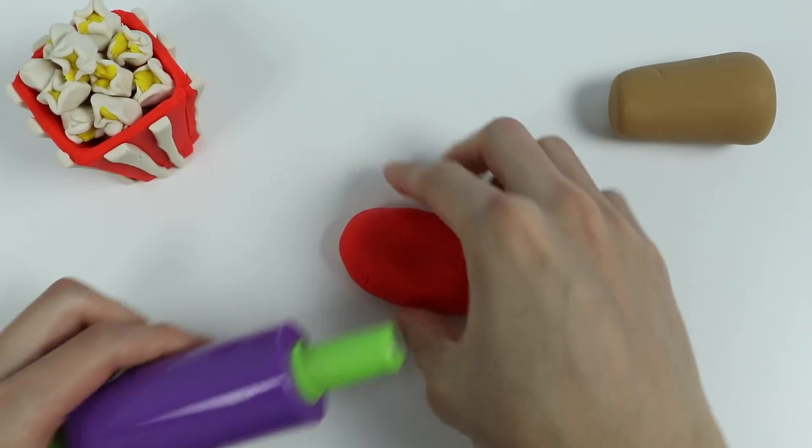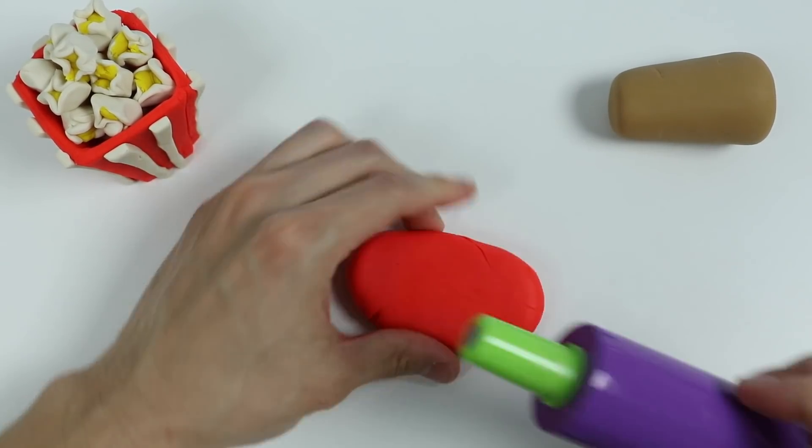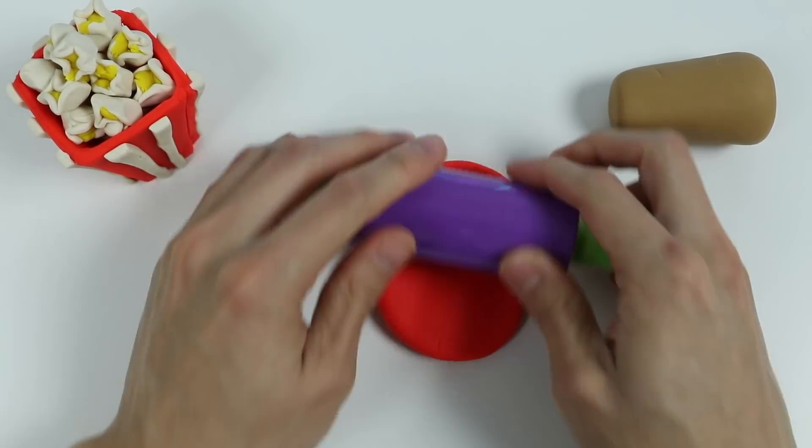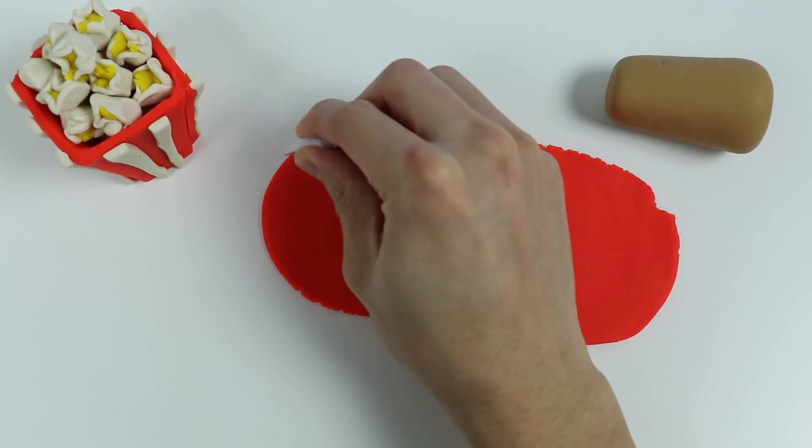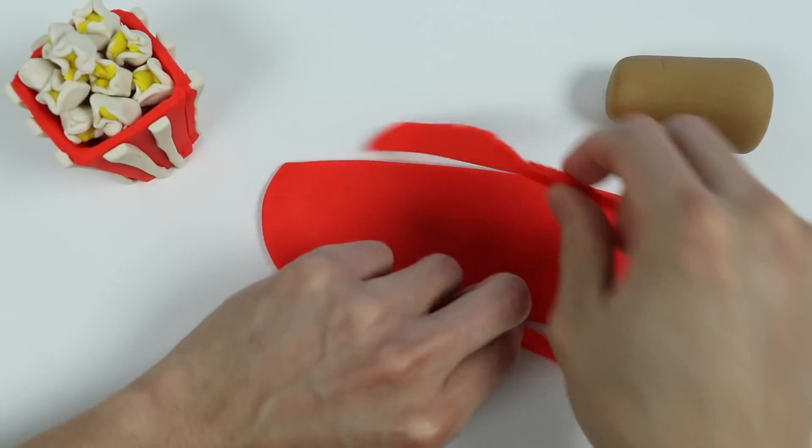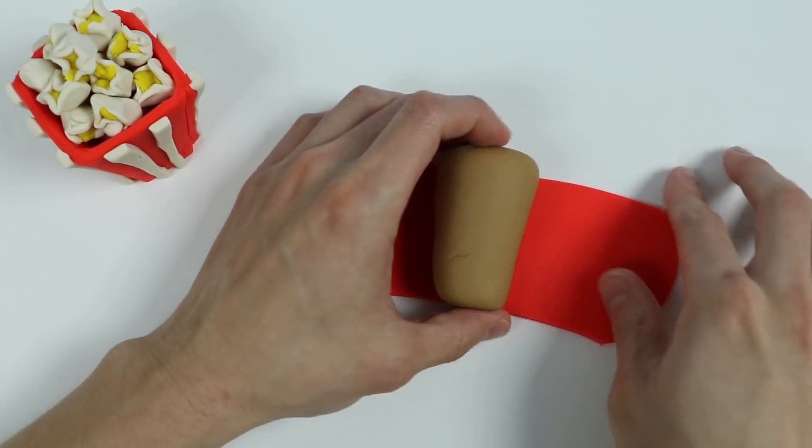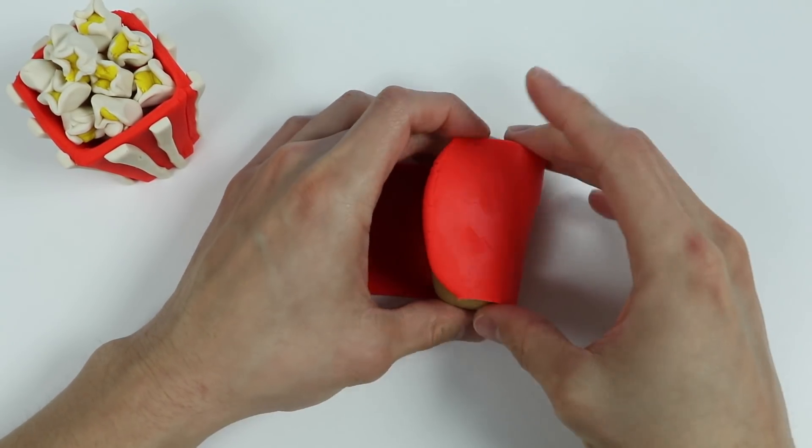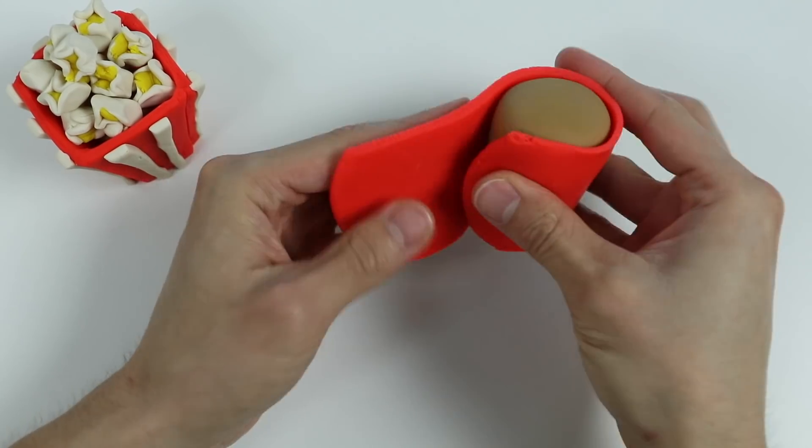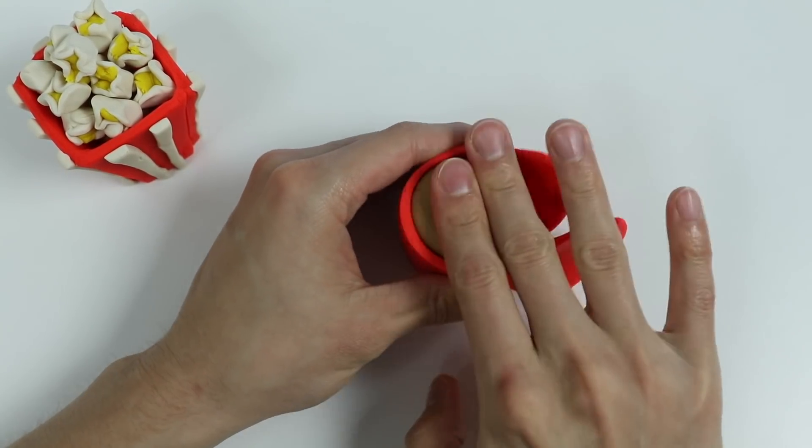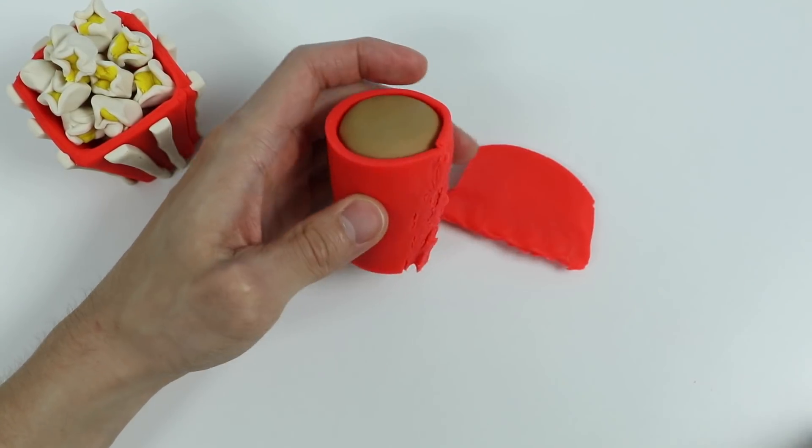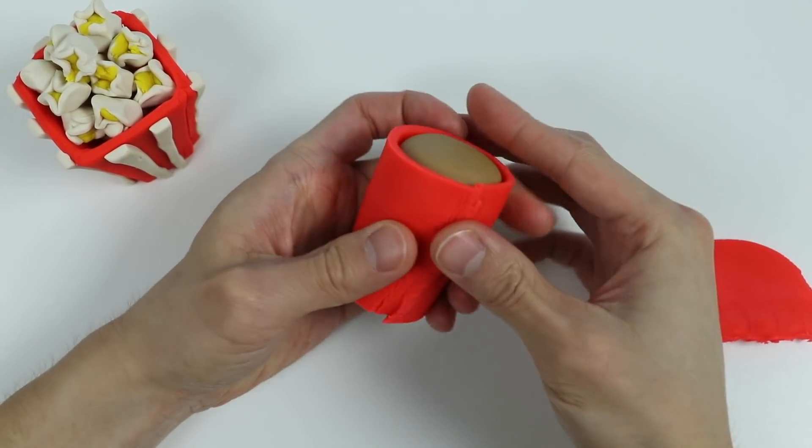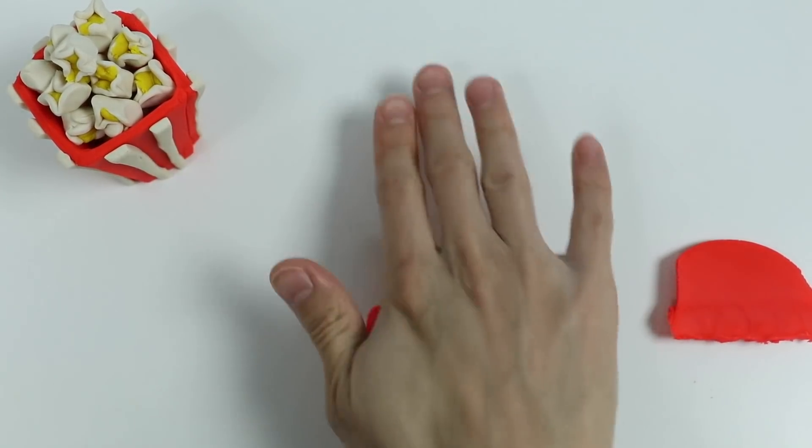Let's start by using red Play-Doh. This brown Play-Doh will be our Cola. And let's wrap the red Play-Doh around. Let's remove any extra Play-Doh. Roll this around.